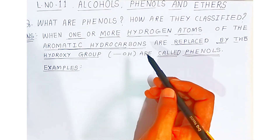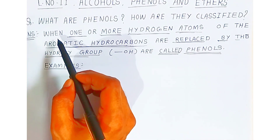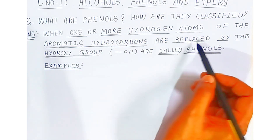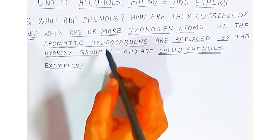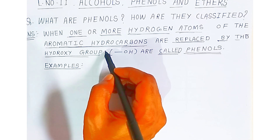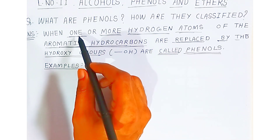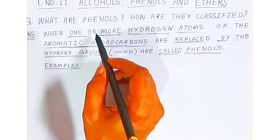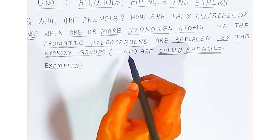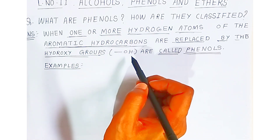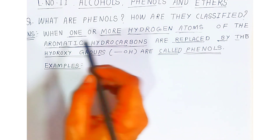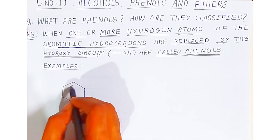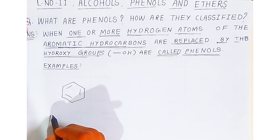So what would be the definition? The definition is: when one or more hydrogen atoms of the aromatic hydrocarbons are replaced by hydroxyl groups. If you are replacing one hydrogen, there will be one hydroxyl group. If you are removing two hydrogen atoms of the aromatic hydrocarbons, there will be two hydroxyl groups, and so on. When the compound is obtained, we call it as phenols.